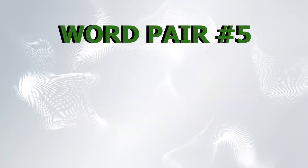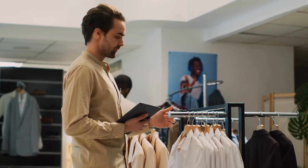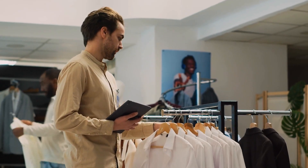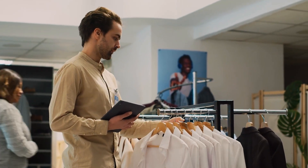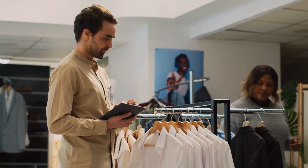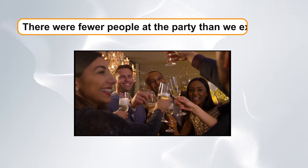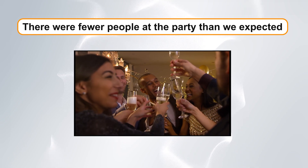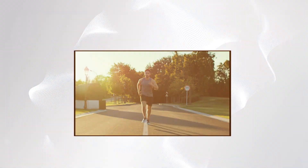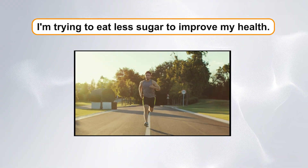Word pair five: fewer versus less. Our fifth confusing word pair is fewer and less. Use fewer when referring to countable items and less when referring to uncountable quantities or amounts. Example sentences: One, there were fewer people at the party than we expected. Two, I'm trying to eat less sugar to improve my health.